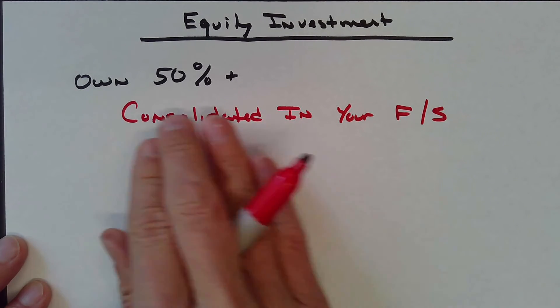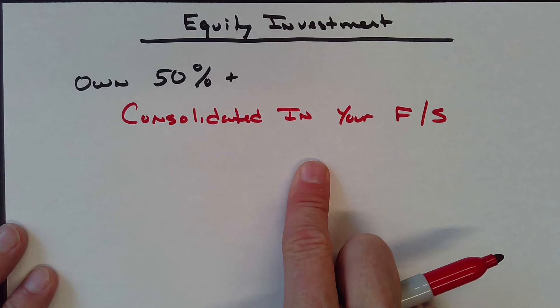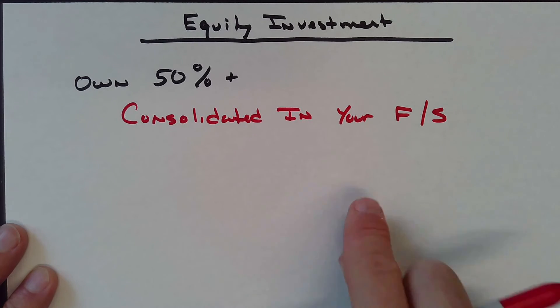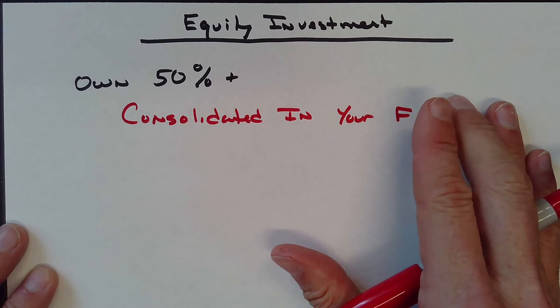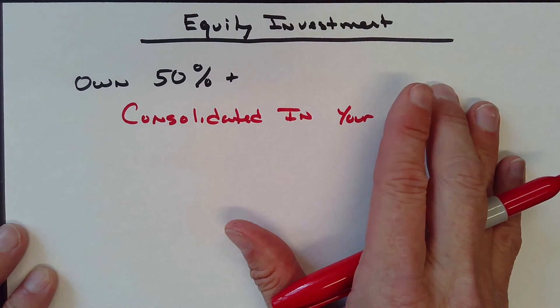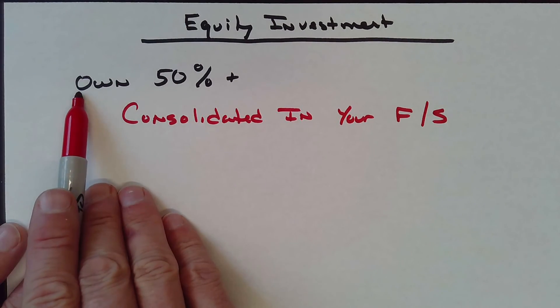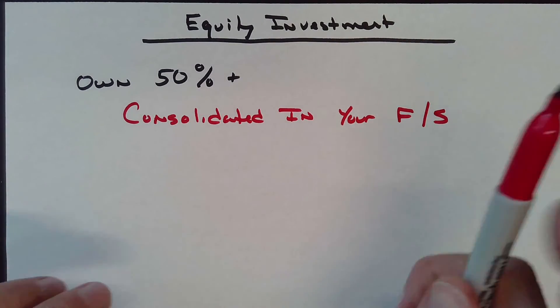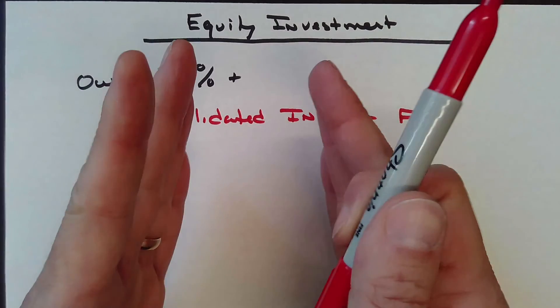You've got revenue, they've got revenue. We're going to take our revenue plus their revenue as our total revenue. They've got expenses, we've got expenses. We recognize our expenses plus their expenses. We consolidate these things, and if we don't own 100 percent, we also have minority holdings or minority shareholders.